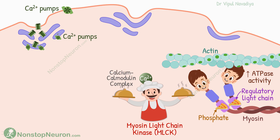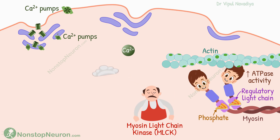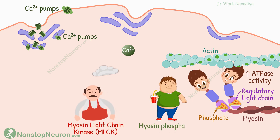Cytosolic calcium concentration falls, so calcium dissociates from calmodulin, and myosin light chain kinase also returns to the inactive state. To remove the phosphate from the regulatory light chain, we have a special enzyme called myosin phosphatase. In a non-phosphorylated state, the ATPase activity of the head is lost, so the myosin cross-bridge cycle also stops. This is how the entire process is reversed.